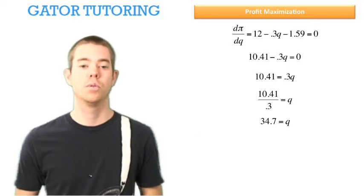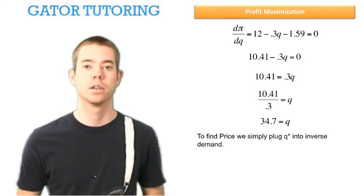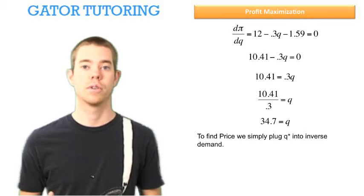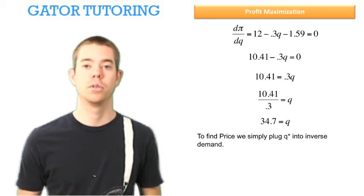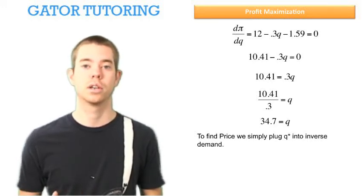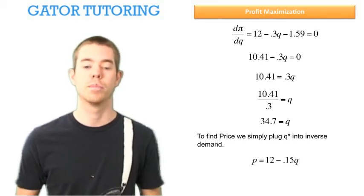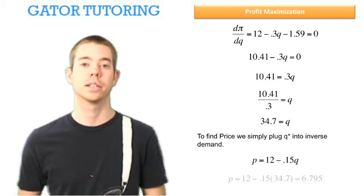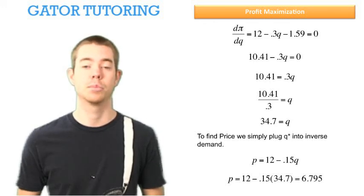So now that we've solved for Q, we can easily solve for price. Now in this question, they only ask us to solve for Q, so we're done. But to solve for price, we just plug in our Q star into inverse demand, which in this case is P equals 12 minus 0.15Q. Plugging in that 34.7, we see that our optimal price would be 6.795.